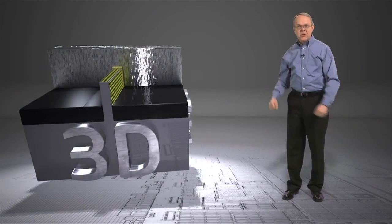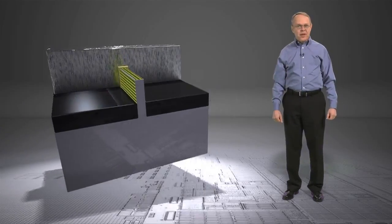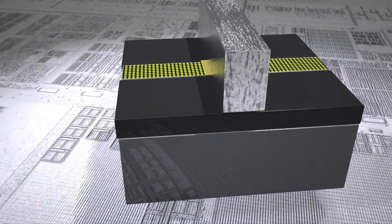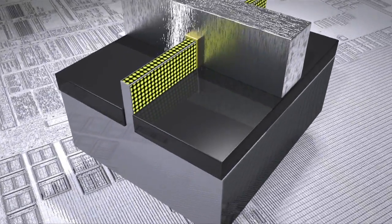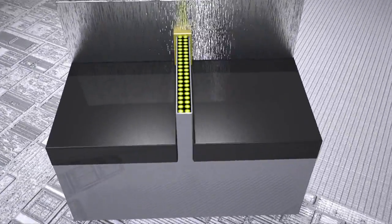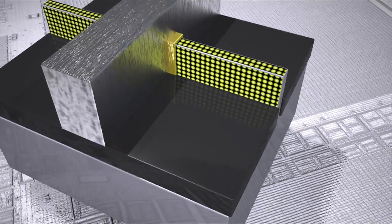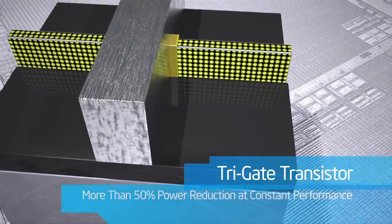With the 3D transistor's architecture, we replace the flat two-dimensional stream with one or more three-dimensional fins. The control is on all three sides of each fin, rather than just one, as in the planar transistor. We call this a tri-gate transistor,